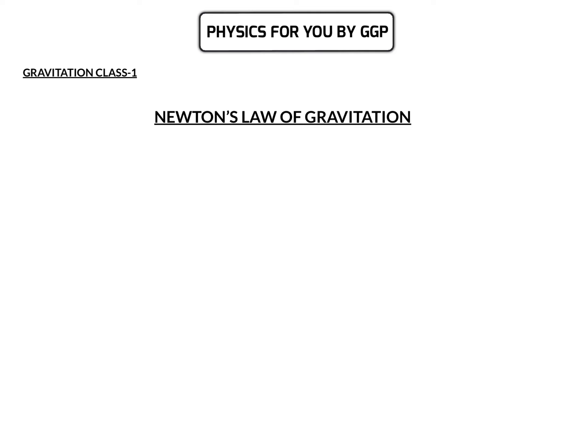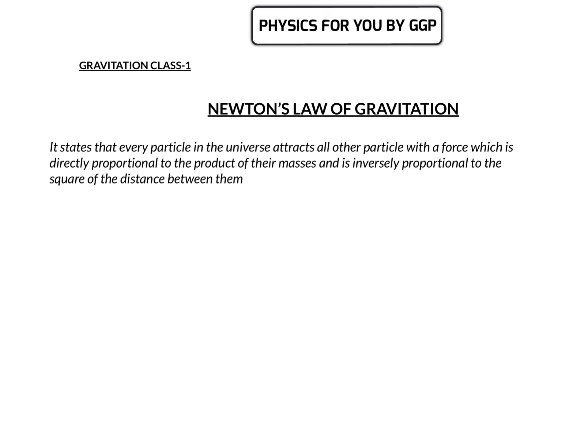Everyone might be knowing what is Newton's Law of Gravitation. It states that every particle in the universe attracts all other particles with a force which is directly proportional to the product of their masses and inversely proportional to the square of distance between them. So if we are considering two masses, m1 and m2, separated by a distance r.